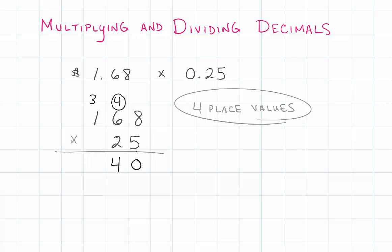Now I've got to bring down my 0. 8 times 2 is 16. 6 times 2 is 12, plus 1 is 13. And 2 times 1 is 2, plus 1 is 3.